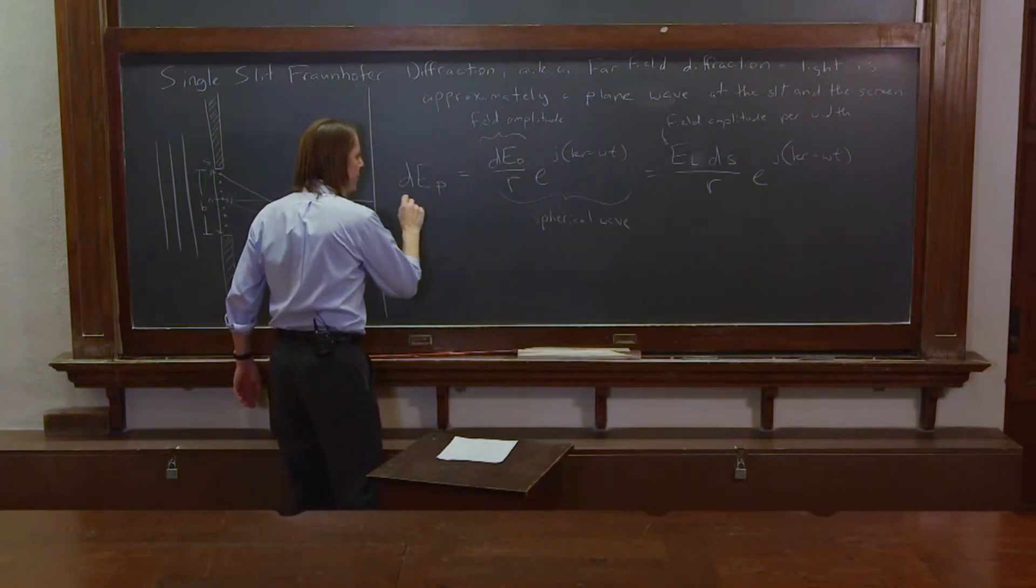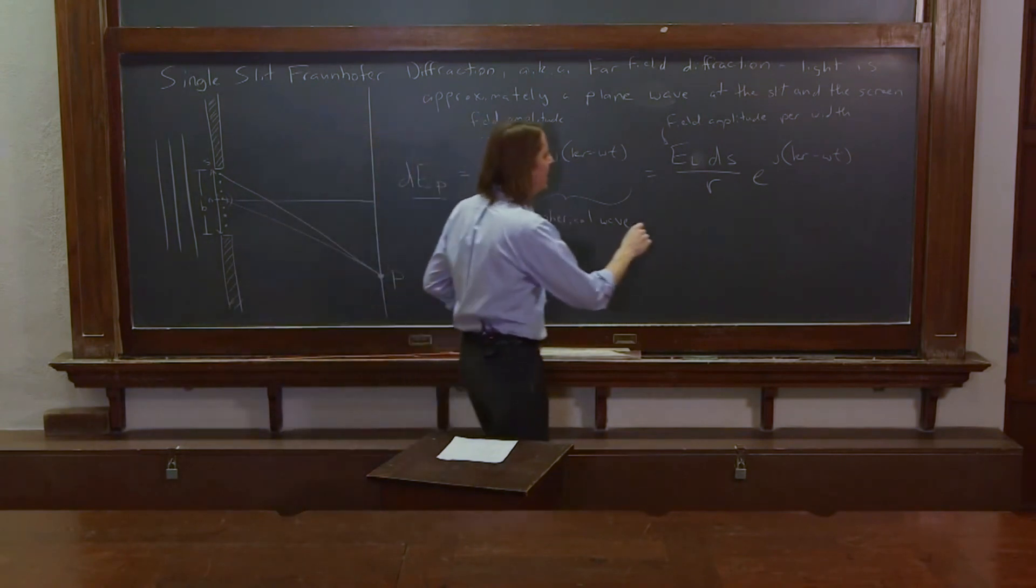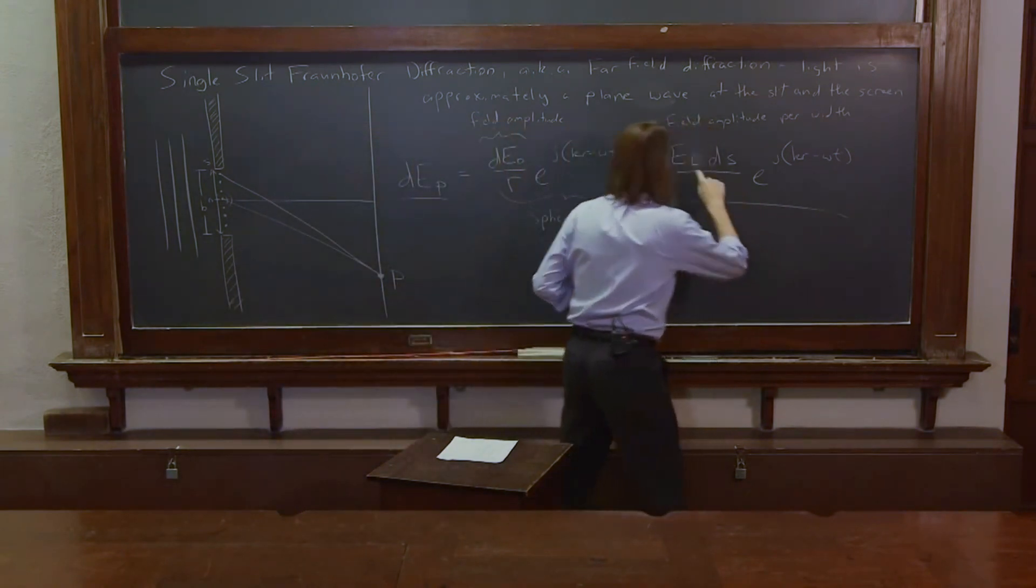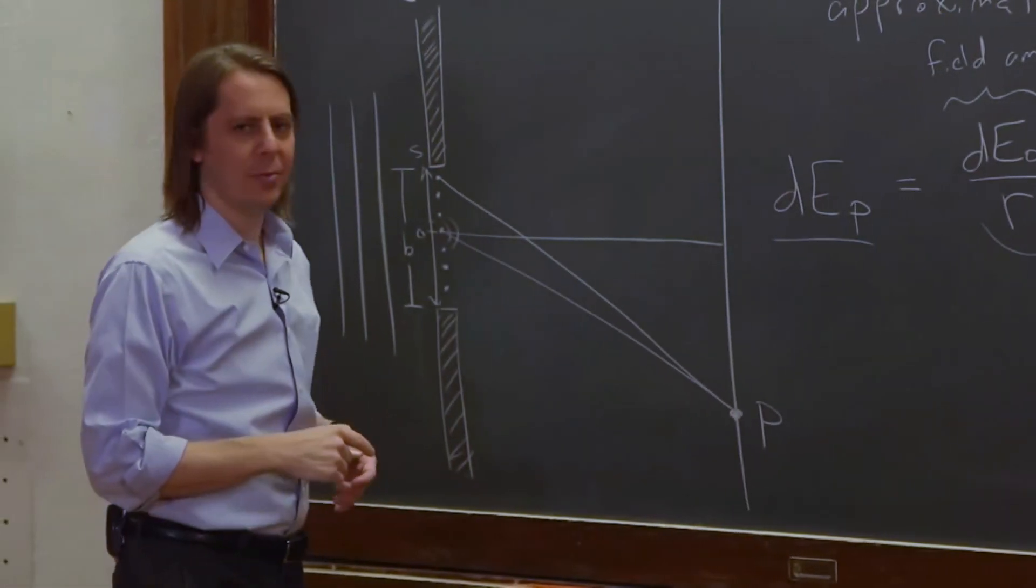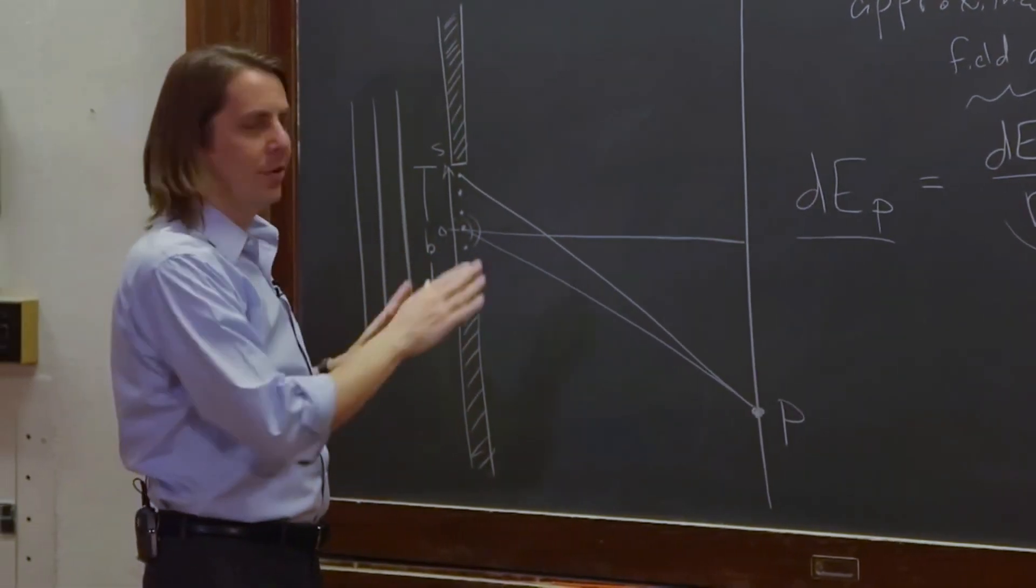So next we'll sum it up, and just like always, we just want to figure out what is dE. Well, this is what we're calling dE. Field amplitude per unit width, dS over R, e to the j(kR - ωt). So that's how you get started.